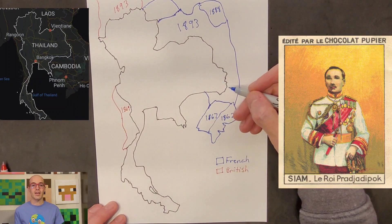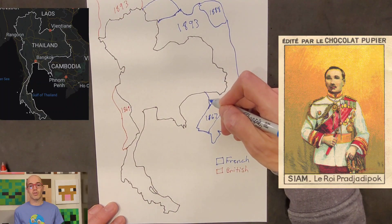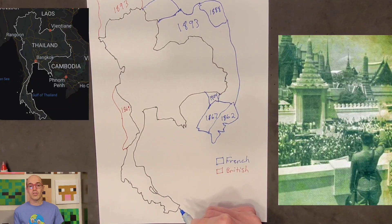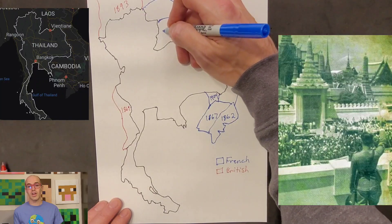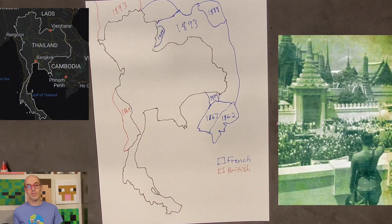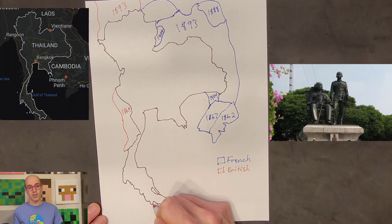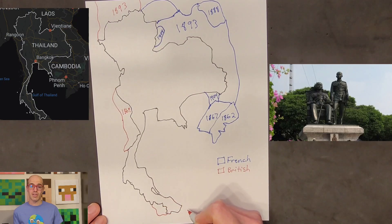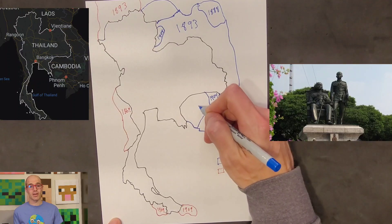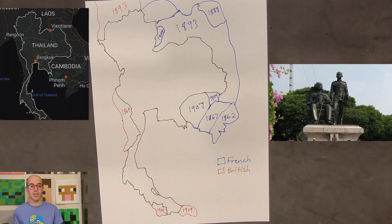Despite these territorial losses, King Rama V implemented reforms and modernization efforts known as the Thaiization policy to strengthen the country internally. This period saw the establishment of centralized governance, modernization of infrastructure, and the introduction of Western-style education and institutions. King Rama V's diplomatic skills and strategic alliances helped Thailand navigate the complexities of colonialism and preserve its independence, laying the foundation for the country's continued sovereignty into the 20th century.